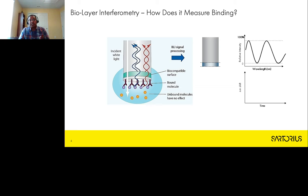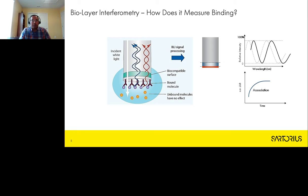As the biolayer thickness increases, the detector sees light wavelengths traveling slightly longer distances, creating an interference pattern. This enables real-time calculation of association rates as the signal increases when the binding complex forms. During dissociation, the thickness of the biolayer decreases, providing a kinetic measure that gives the dissociation rate constant and affinities.